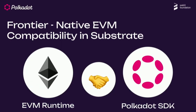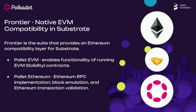As a use case to tie everything together: Frontier is a native EVM compatibility layer inside Substrate. It allows you to run an EVM inside a Substrate-based blockchain — so if you want to upload Solidity-based smart contracts, you can do that with the Frontier pallets included. Frontier is implemented as two pallets: pallet-evm, which lets you upload Solidity smart contracts, and pallet-ethereum, which exposes an RPC implementation so you can connect MetaMask to a Substrate or Polkadot-based chain.